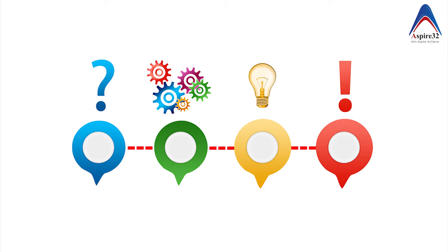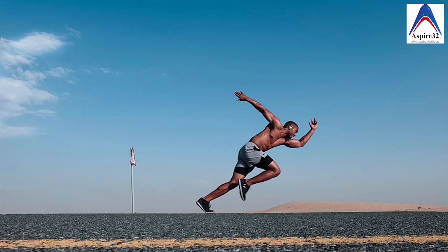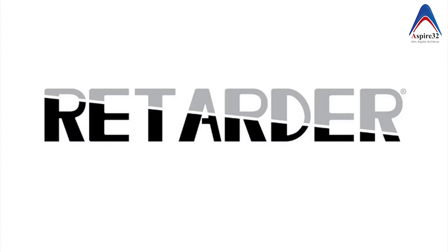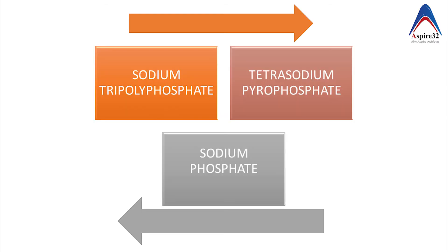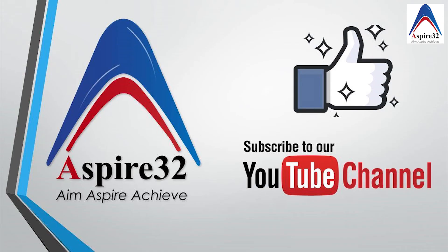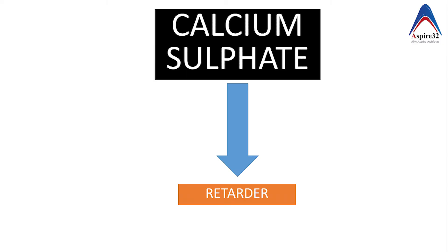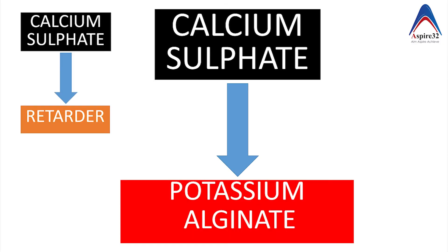There is still another problem: if you want to use this material clinically, the reaction continues so fast that you may not find sufficient working time. So in order to delay the setting, a third component is added, termed the retarder. This is commonly either sodium phosphate, sodium tripolyphosphate, or tetrasodium pyrophosphate. The calcium sulfate will first react with this retarder, and unless the retarder is completely used up, the calcium sulfate will not react with the potassium alginate, giving us a good amount of working time.